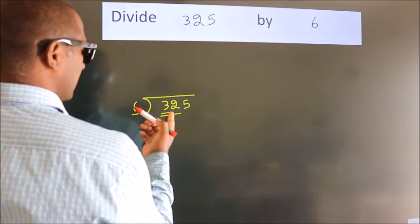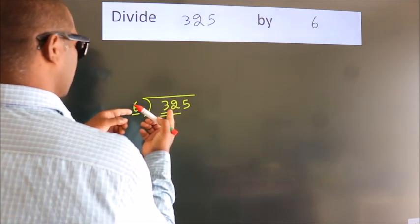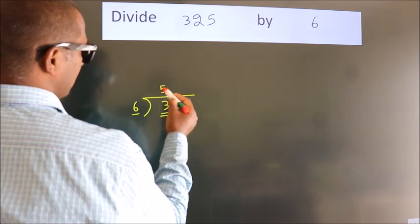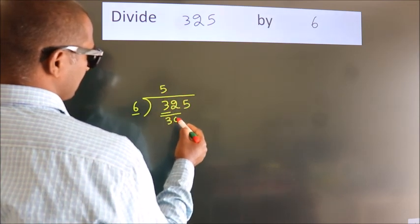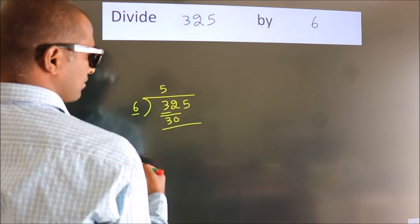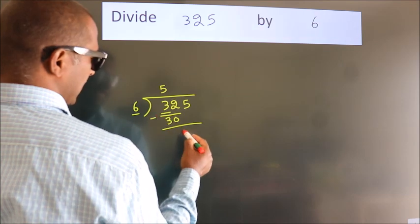A number close to 32 in the 6 table is 6 fives, 30. Now, we should subtract. We get 2.